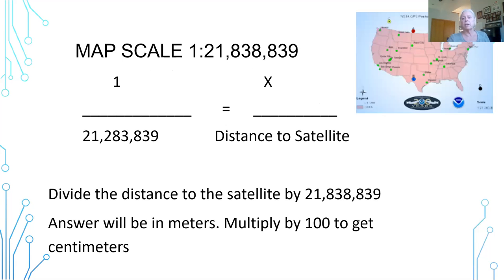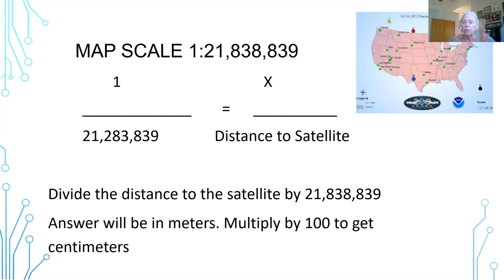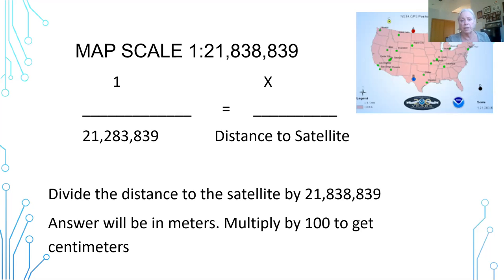We're looking at a map scale that is not real life. The map scale on this particular map is 1 to 21,838,839. In order to convert the number you're getting to match your map, you divide the distance to the satellite by that map scale, and the answer will be in meters. You then multiply by 100 to get centimeters, and that's the number you will use on the paper map printed out for the students.